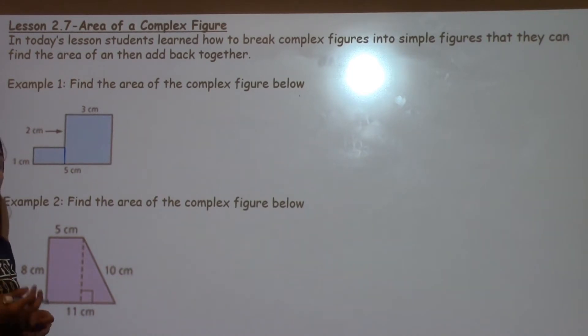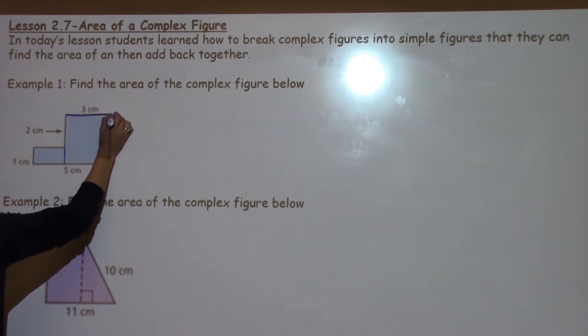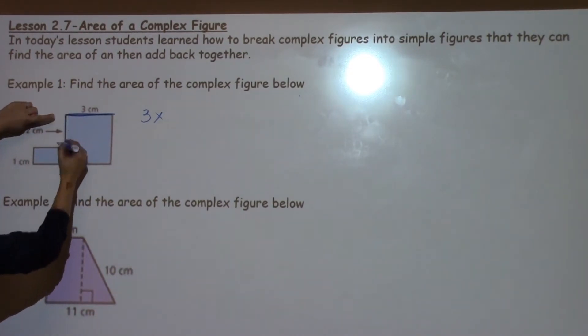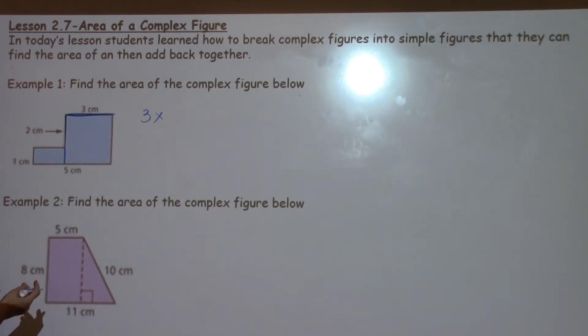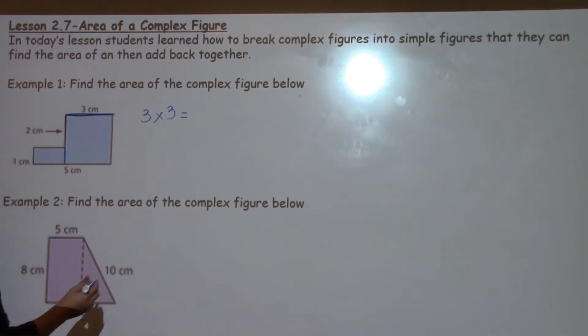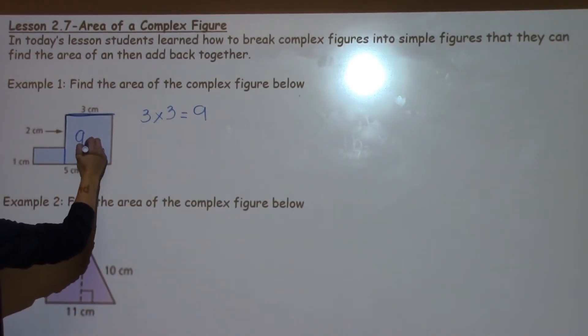The formula for finding the area of a square is length times width or base times height. I know that I already have one of those measures there, 3, and because it's a square it's also going to be 3. But just to check, since this is a complex figure I see that this side says 2 and this side says 1. So I know that if this is 2 and 1, that's 3 put together, it's going to be 3 times 3. 3 times 3 is 9, so this square is 9 centimeters squared.